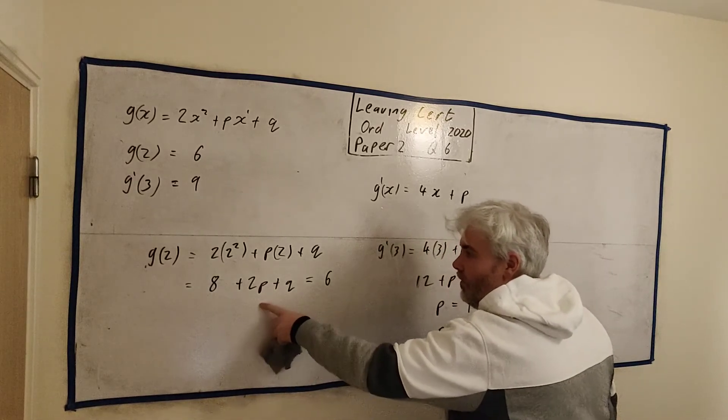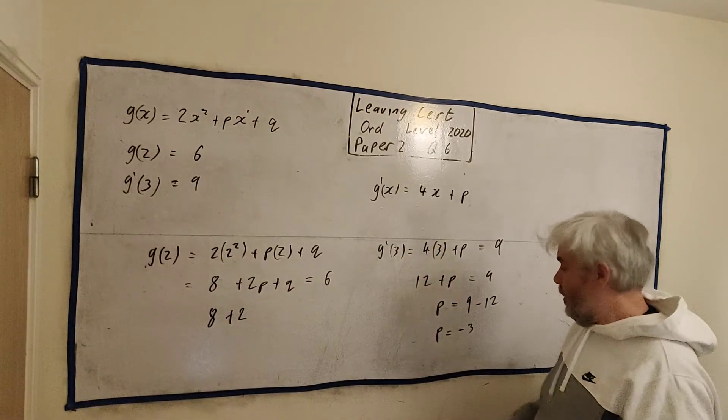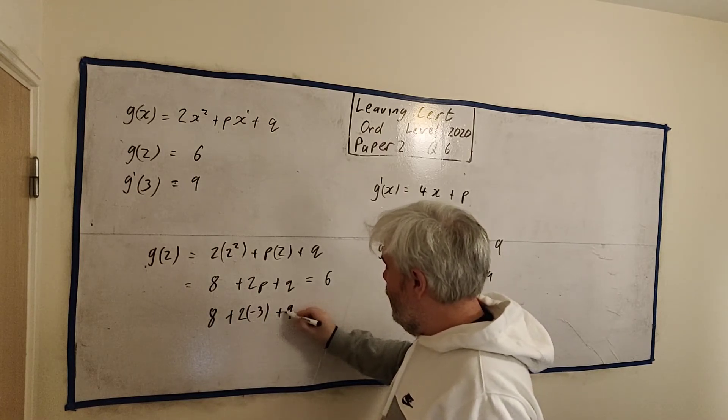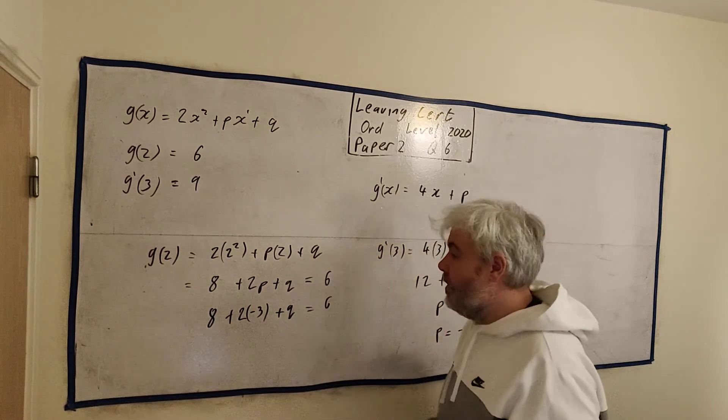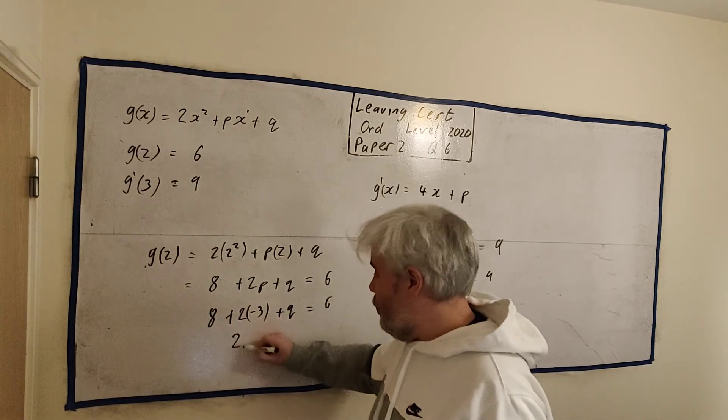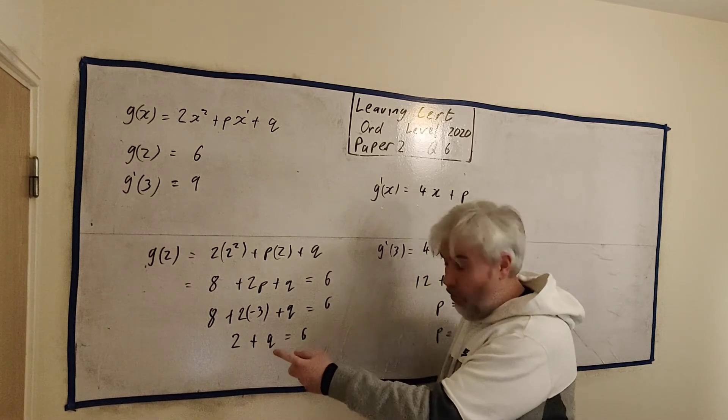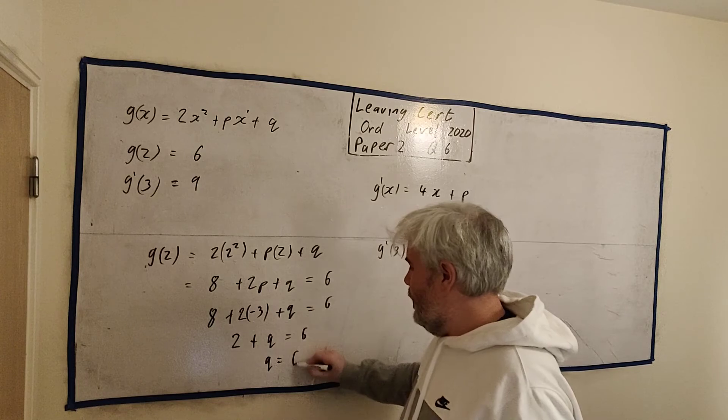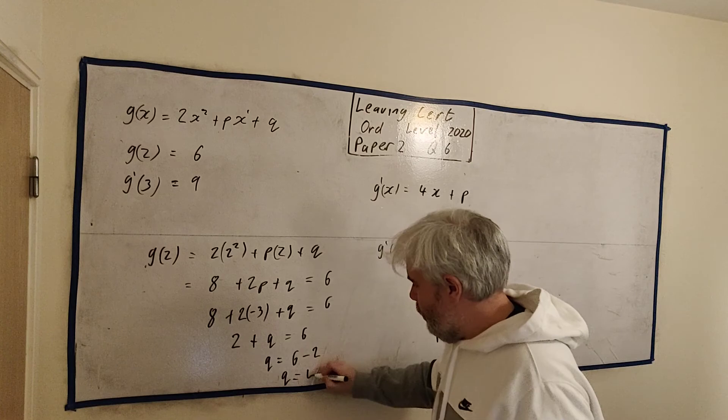Well, now we can do this one here. It's 8 + 2p + q, but I know p now. p is -3, so 8 + 2(-3) + q = 6. Let's clean this up. 2 multiplied by -3 is -6. 8 - 6, that's just 2. 2 + q = 6. We can figure out q must be 4. But let's do it more properly. q = 6 - 2, so q = 4.